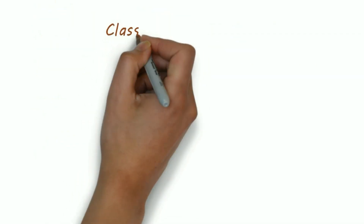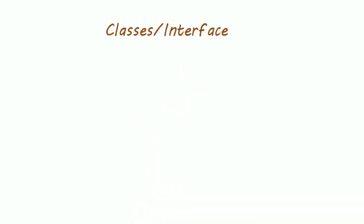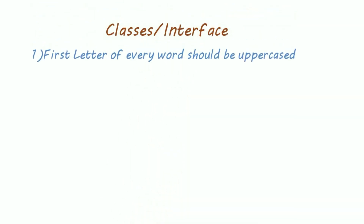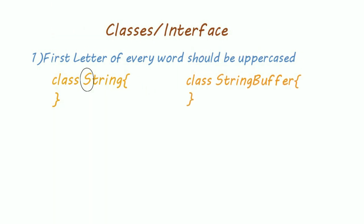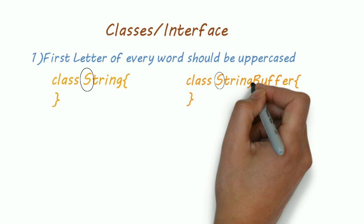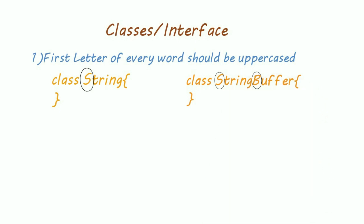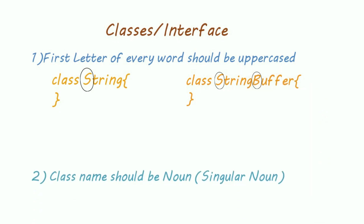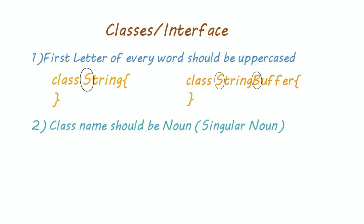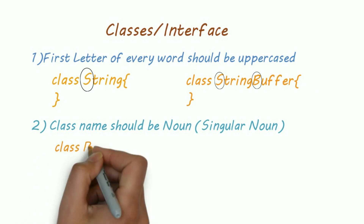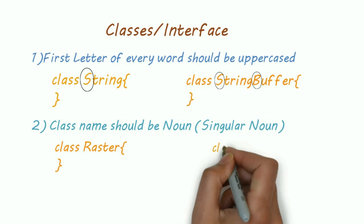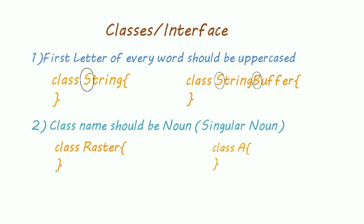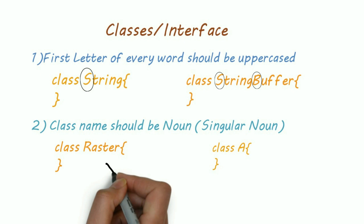For classes or interfaces, the first letter of every word should be uppercase — for example, class String, class StringBuffer. The class name should be a noun that is singular. For example, class Raster makes sense, but class A doesn't make any sense.